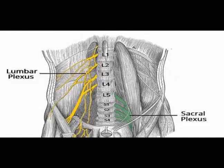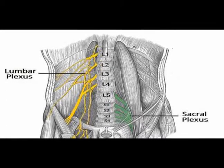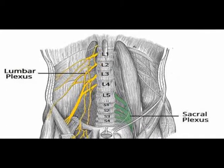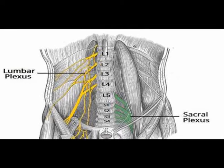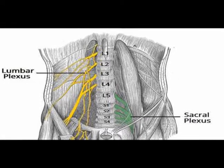The lumbar plexus and the sacral plexus are networks of nerves located bilaterally, which arise from the spinal nerve roots in the lower thoracic spine, the lumbar spine, and in the sacrum. The lumbar plexus arises from spinal nerve roots T12 through L5, and the sacral plexus arises from spinal nerve roots L4 through S4.